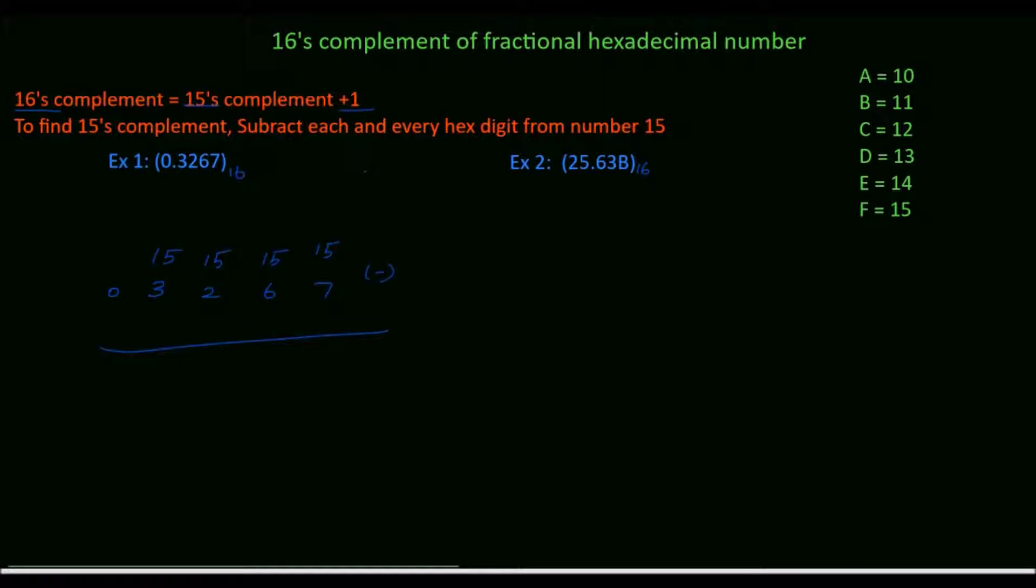15 minus 7 which is 8. 15 minus 6 which is 9. 15 minus 2 which is 13. 13 is equal to D. 15 minus 3 which is 12. 12 is equivalent to C.